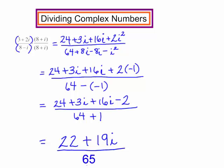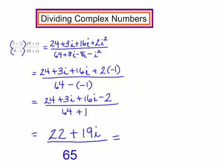Now, for my last step, I'm going to write this in standard form, the a plus bi. And your answer will be 22 65ths plus 19 65ths, i.